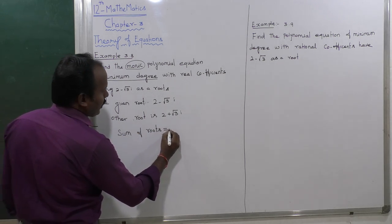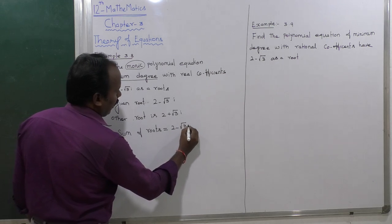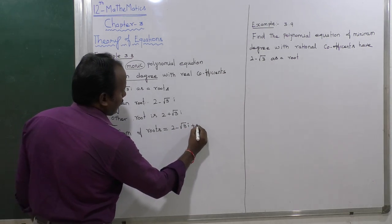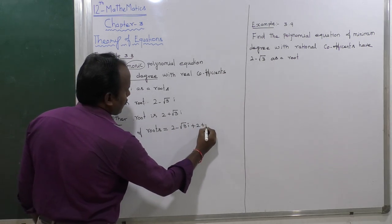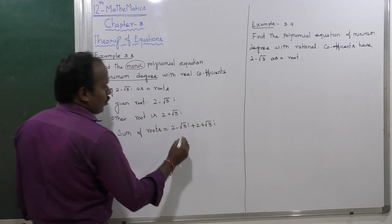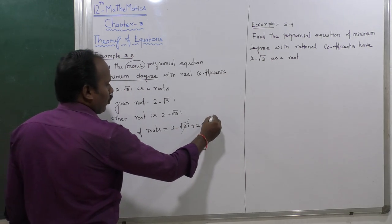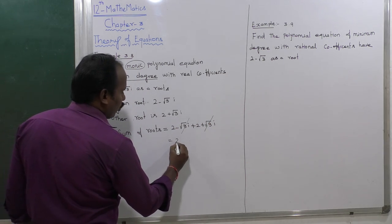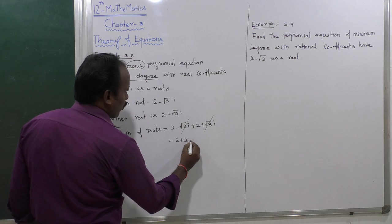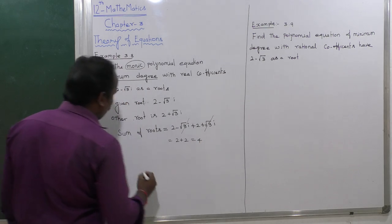Sum of roots is equal to (2 minus root 3 i) plus (2 plus root 3 i). The root 3 i terms cancel each other, and the remaining value is 2 plus 2, which equals 4. So the sum of the roots is 4.